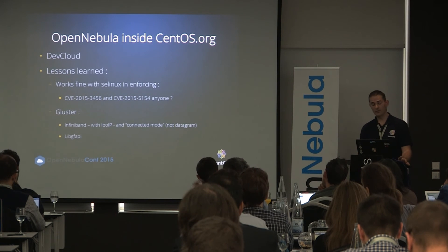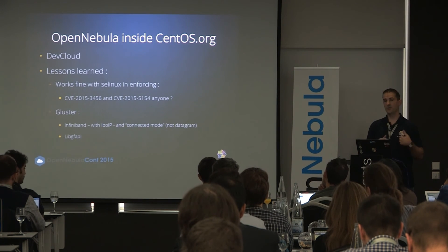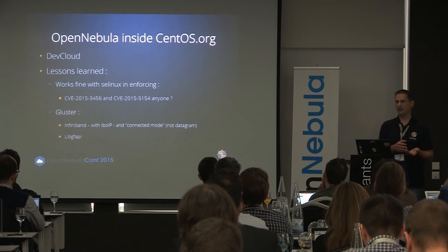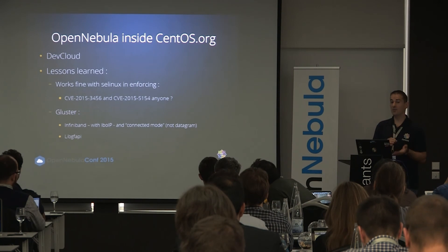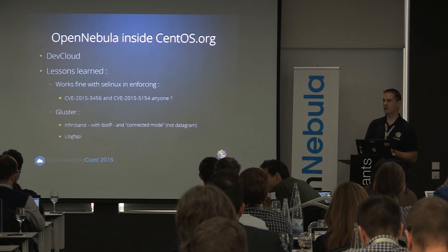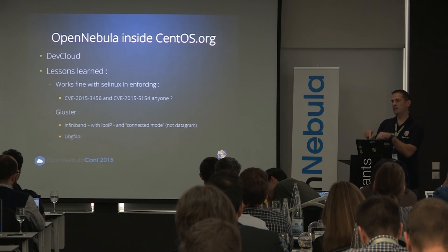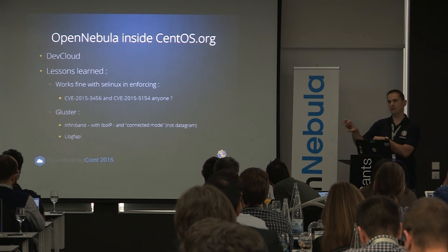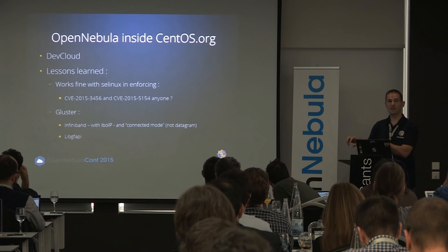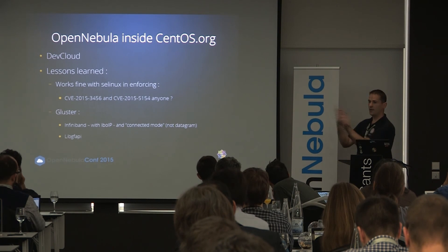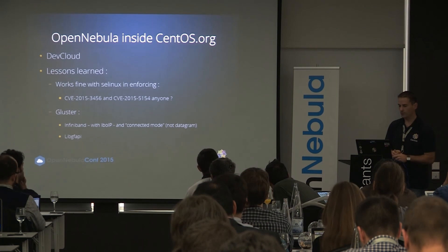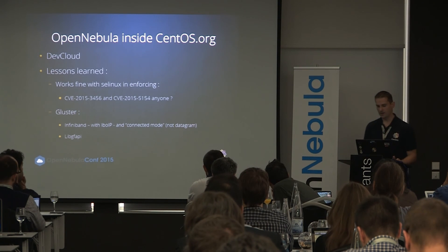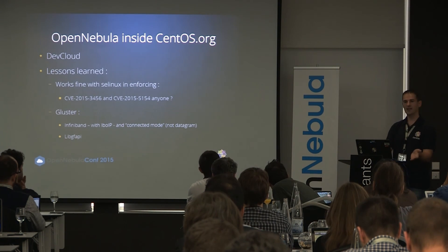The other improvement was switching away from FUSE, because FUSE has a big overhead and is anything but interesting for performance. You just switch to libgfapi. OpenNebula itself still needs the FUSE mount point to manipulate images, but as soon as virtual machines start, they talk directly through the Gluster API and don't need the FUSE mount point anymore.